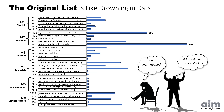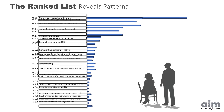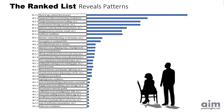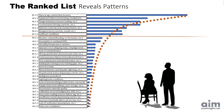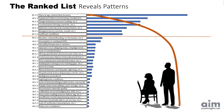The team feels stuck, asking: what do we fix first? What happens when the team sorts the bars from highest to lowest? Suddenly, a pattern appears. Just a handful of factors account for most of the asset failures. And that's the turning point — from feeling overwhelmed to knowing where to act first.